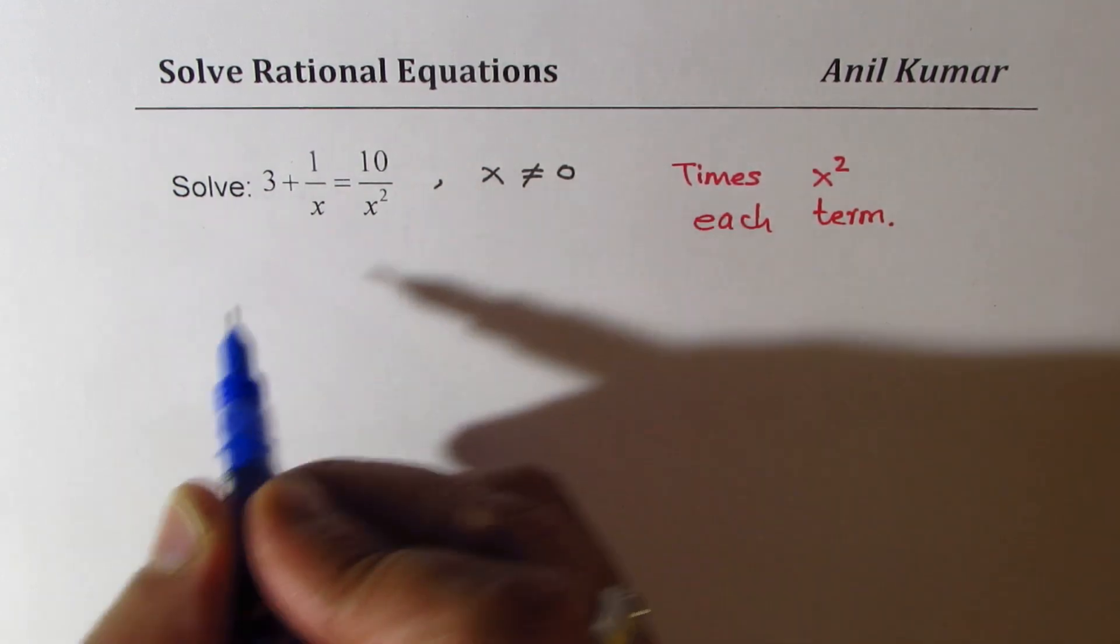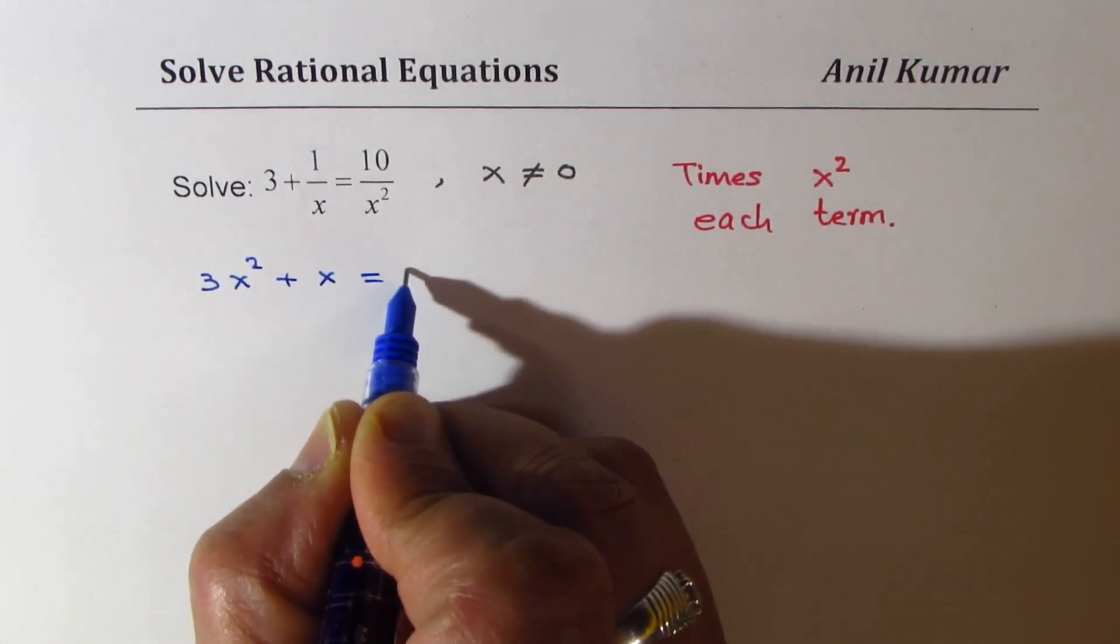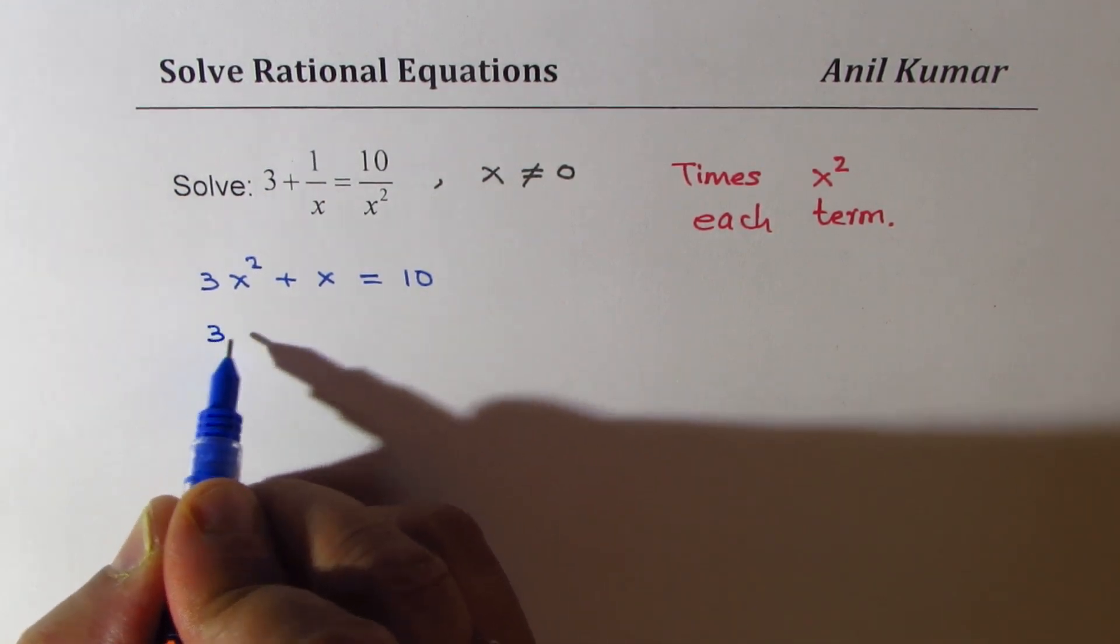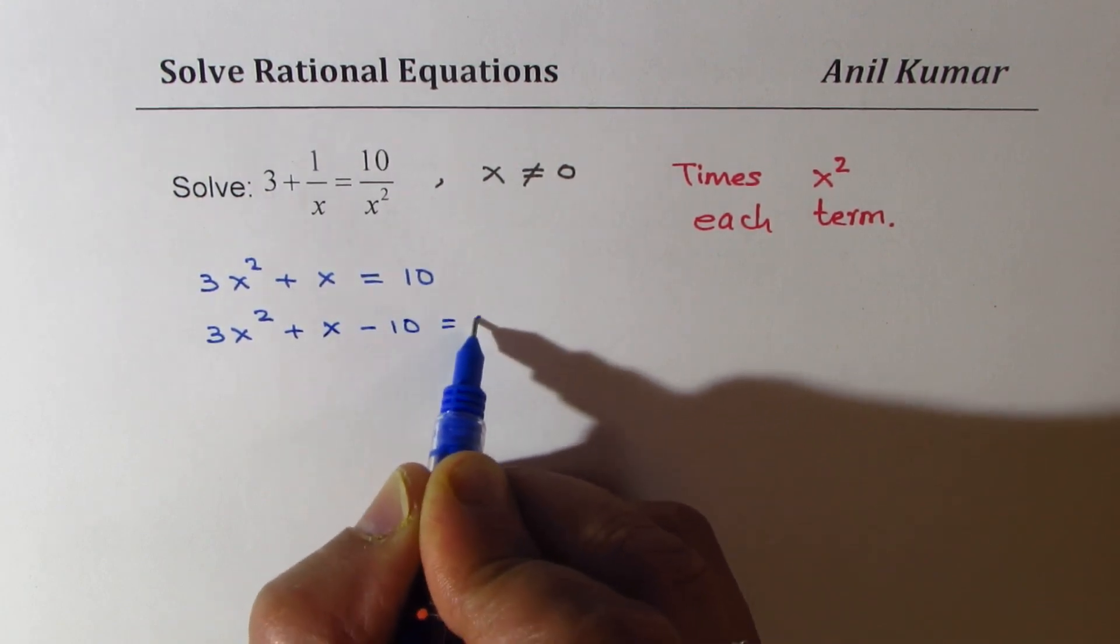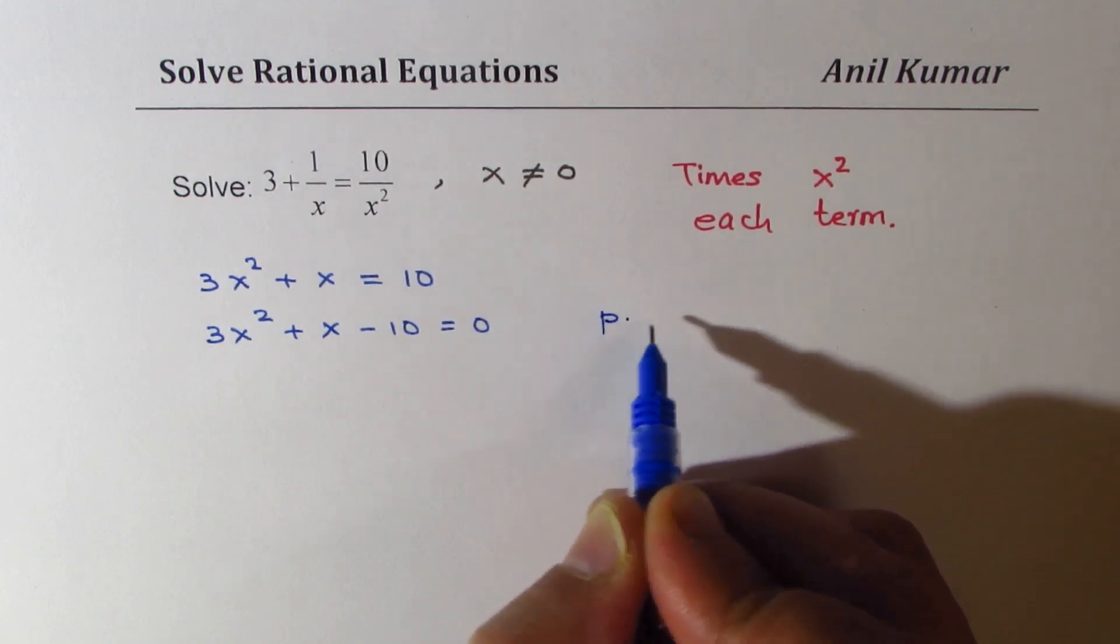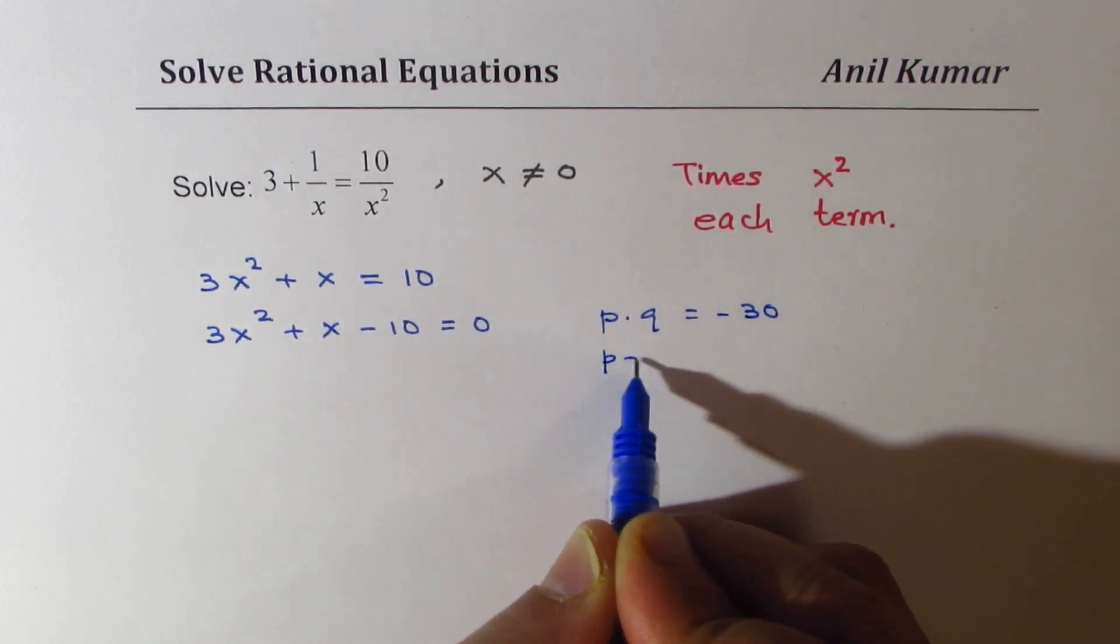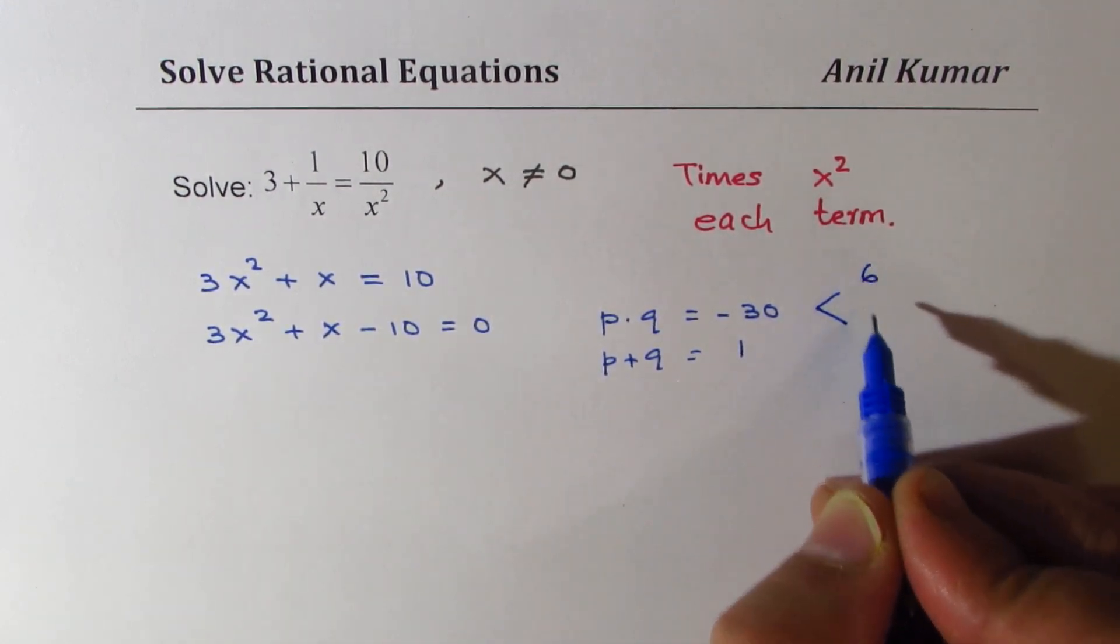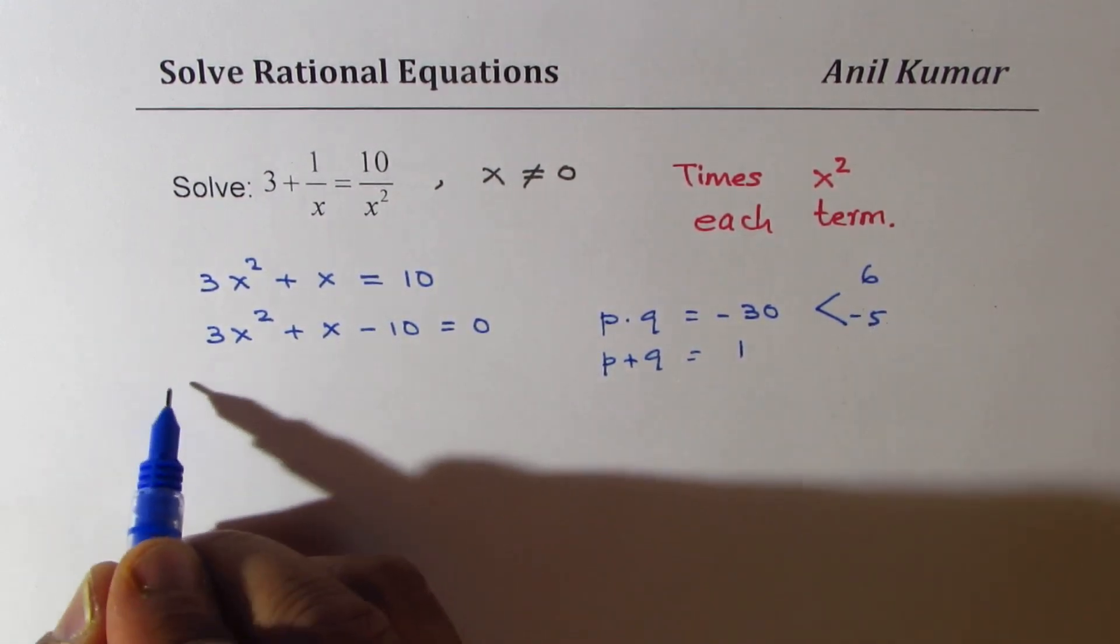Then, what we get here is 3x squared plus x equals to 10. Now, that is again a quadratic equation. We could bring all the terms together and solve. 3 times minus 10 is minus 30. So product of two numbers should be minus 30, and sum of two numbers should be 1. We could work with 6 and 5, where 5 is negative. So splitting x into 6 and minus 5...